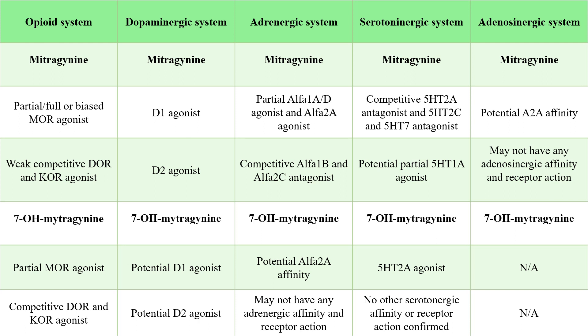Regarding the serotonin system, it seems that 7-hydroxymitragynine may act as an agonist for 5-HT2a receptors. Nevertheless, conflicting evidence suggests it may have no affinity for serotonergic receptors, implying no pharmacological activity in this domain. Lastly, in the adenosine system, 7-hydroxymitragynine exhibits no discernible pharmacological activity.